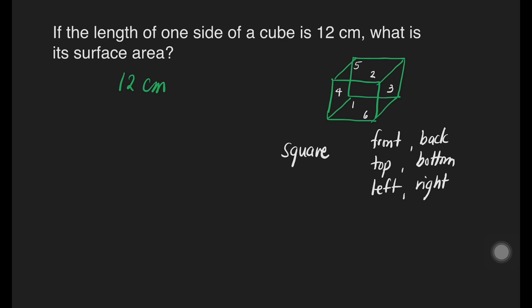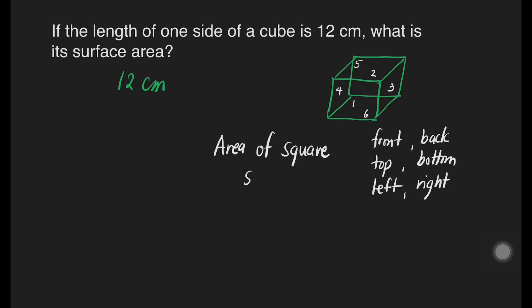It means that we need only to add all the area of the surfaces of the cube. But, the question now is, how do we get the area of a square? Do you still remember the formula of finding the area of the square? Side times side or side squared.